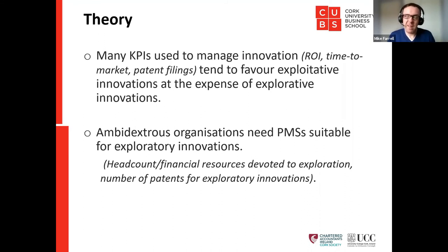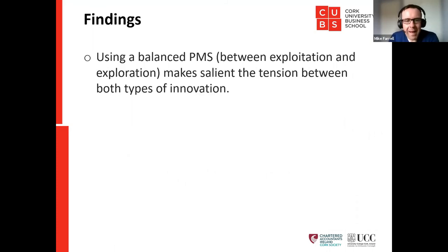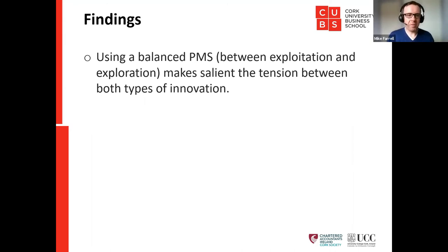What the Galway study argues is that ambidextrous organisations need PMSs suitable for exploratory innovations. Examples include: headcount or financial resources devoted to exploration, and number of patents filed for exploratory innovations. The idea is to introduce into your performance measurement system some 'out there' measures that give you a sense of where you are. For a small accounting firm, rather than just measuring profit increase, you might measure what new types of engagements you've taken on as technology and regulation changes.